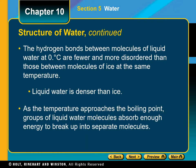As the temperature approaches the boiling point, groups of liquid water molecules absorb enough energy to break up into separate molecules. Because of the hydrogen bonding between water molecules, a high kinetic energy is needed, causing water's boiling point to be relatively high at 100 degrees Celsius, which is high compared to other liquids that have similar molar masses.